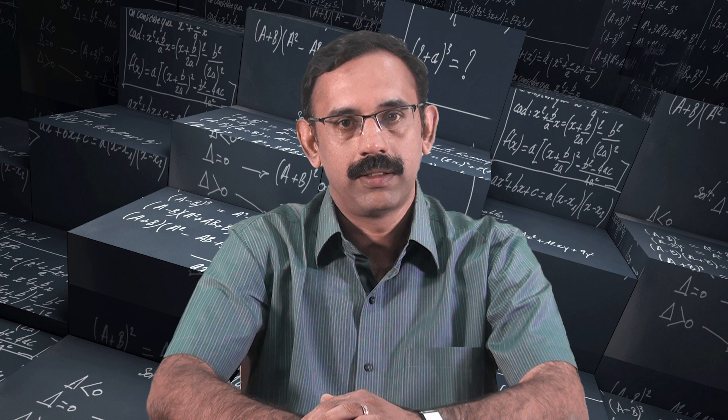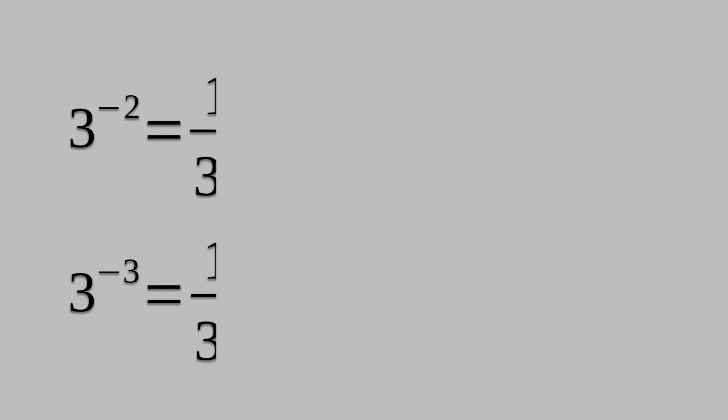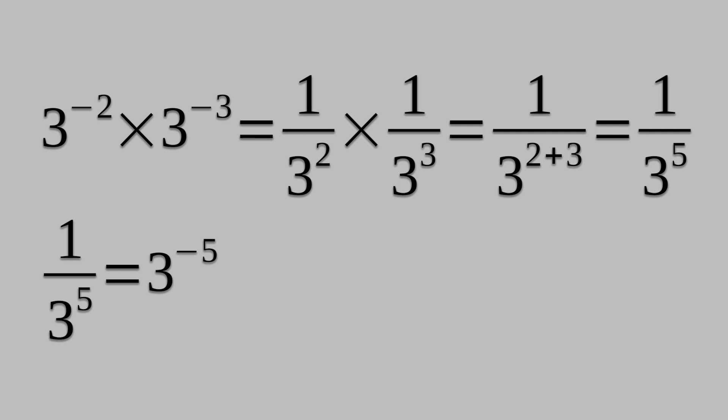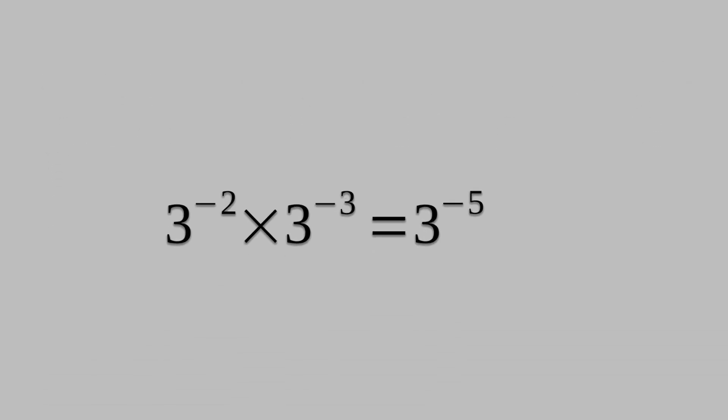We will check with some examples. Let us try to find 3 raised to minus 2 times 3 raised to minus 3. We know that 3 raised to minus 2 is equal to 1 divided by 3 squared, and 3 raised to minus 3 is equal to 1 divided by 3 raised to 3. So, 3 raised to minus 2 times 3 raised to minus 3 equals 1 divided by 3 squared times 1 divided by 3 cubed, which equals 1 divided by 3 raised to 2 plus 3, which equals 1 divided by 3 raised to 5, written as 3 raised to minus 5.